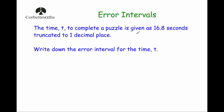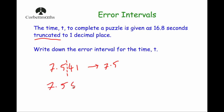Our final example: the time t to complete a puzzle is given as 16.8 seconds, truncated to one decimal place. Write down the error interval for the time t. This one has been truncated as opposed to being rounded, so we approach it slightly differently. As a quick recap on truncation: if you had a number like 7.541 and were asked to truncate it to one decimal place, you go to the first decimal place and ignore anything beyond that — so it becomes 7.5. Similarly, 7.589 truncated to one decimal place would also be 7.5, not 7.6. Truncation is simply cutting a number's decimals short to a certain point.